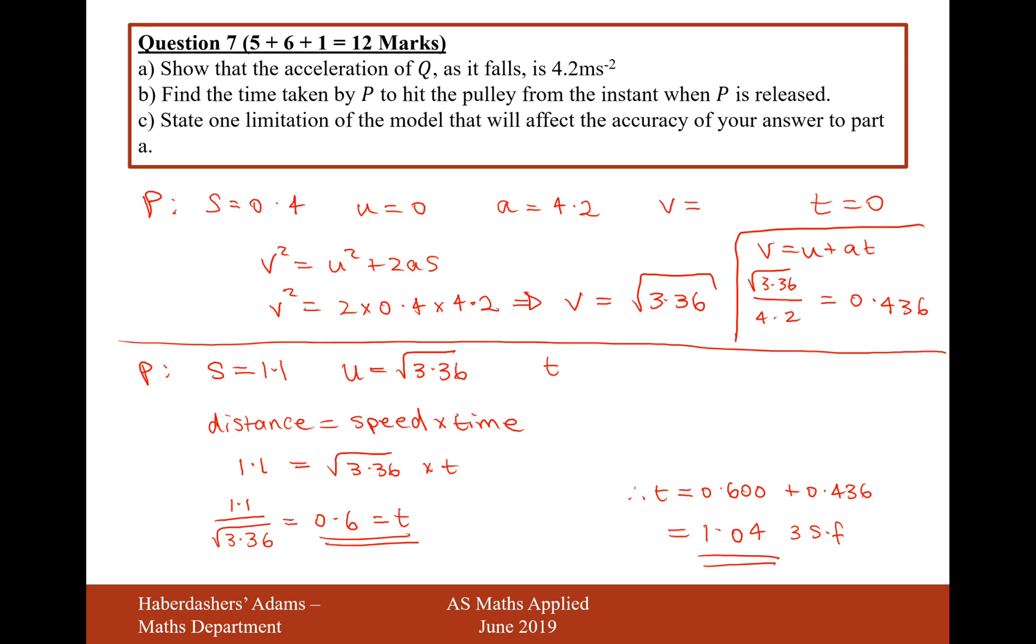Moving on to part C. State one limitation of this model that can affect the accuracy of your answer to part A. Well, potentially the string might get in the way of the particle reaching the pulley system. The rope might weigh something. There might be friction on the pulley system. There might be friction on the ground. So this is just state one limitation that might make this scenario more accurate. So there we are, that's the answer for question 7, worth a total of 12 marks. Let's now move on to question 8.